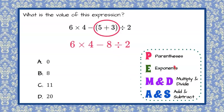Our next step, there are no exponents. We're going to multiply and divide in order from left to right. So we're going to do 6 times 4 and 8 divided by 2. 6 times 4 is 24, and 8 divided by 2 is 4.